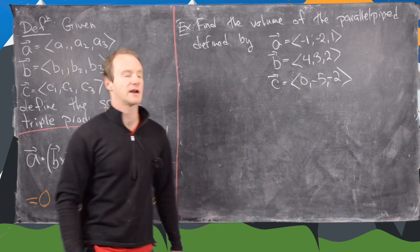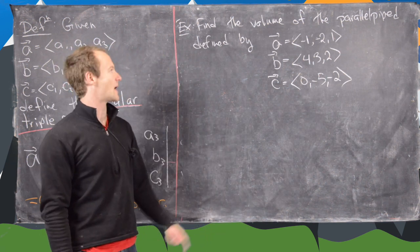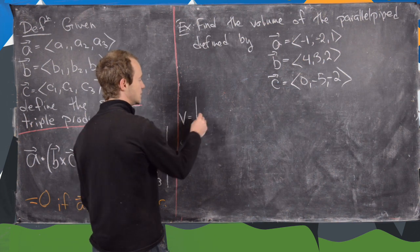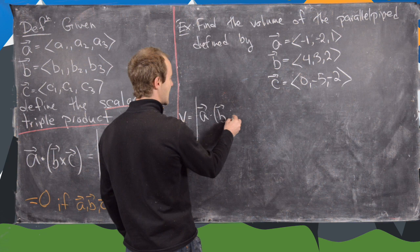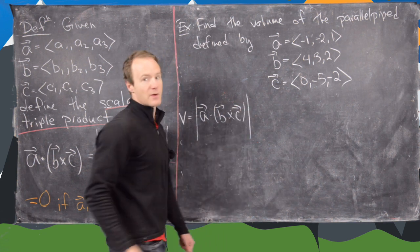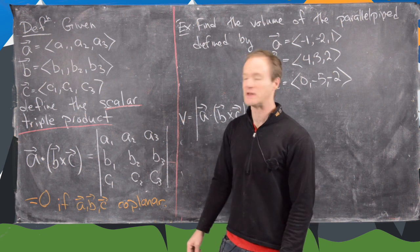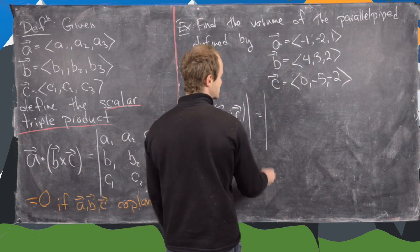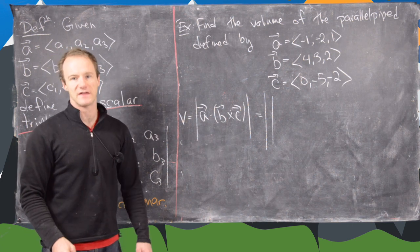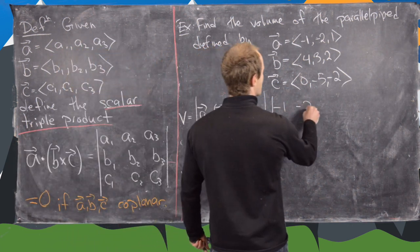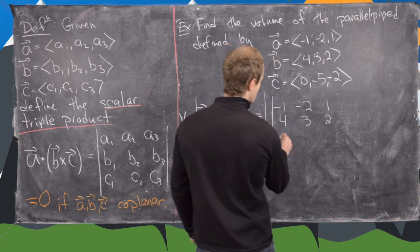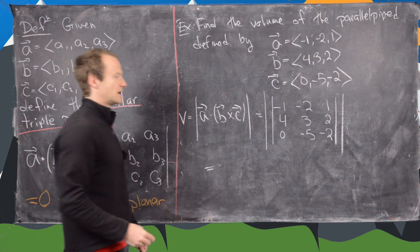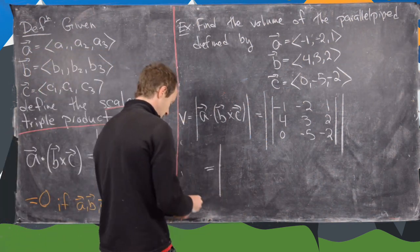Now let's look at an example: find the volume of the parallelepiped defined by three vectors a, b, and c. By our theorem, the volume equals the absolute value of the scalar triple product a dot (b cross c), which by the proposition equals the absolute value of the determinant of the matrix whose rows are a, b, and c. The matrix is: a = (-1, -2, 1), b = (4, 3, 2), c = (0, -5, -2).